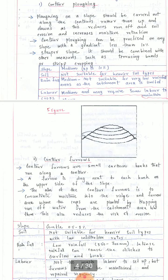First we will see contour plowing. Plowing on a slope should be carried out along the contours rather than up and down, as this reduces runoff and soil erosion and increases moisture retention. The diagram shows contours where at equal elevational values we will make the furrows. The slope should be maximum medium, that is up to 10 percent. Soil type is not suitable for heavier soils. Rainfall should be medium; not suitable for very low rainfall areas as the catchment area is limited. Labour required is medium and may require some labour to maintain.